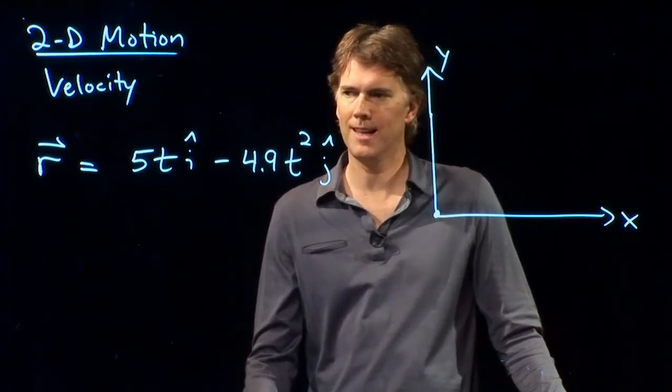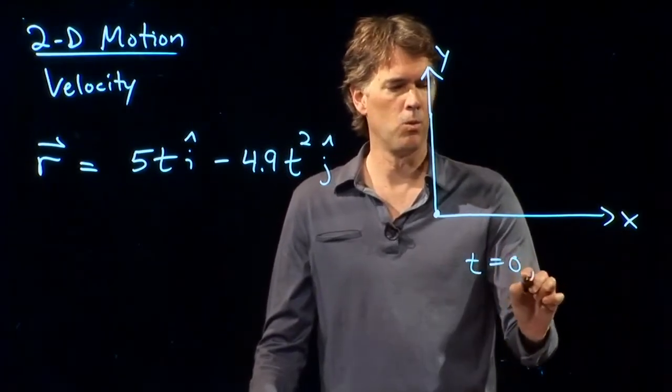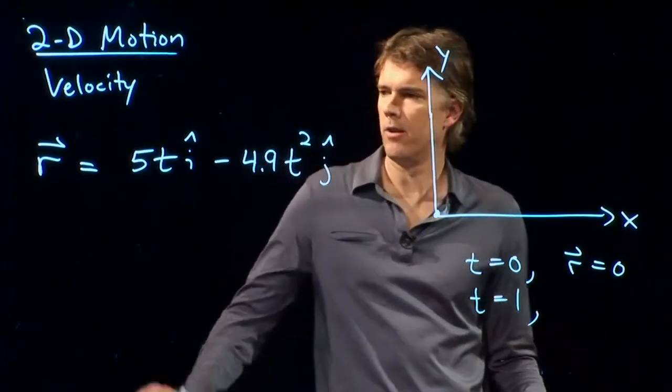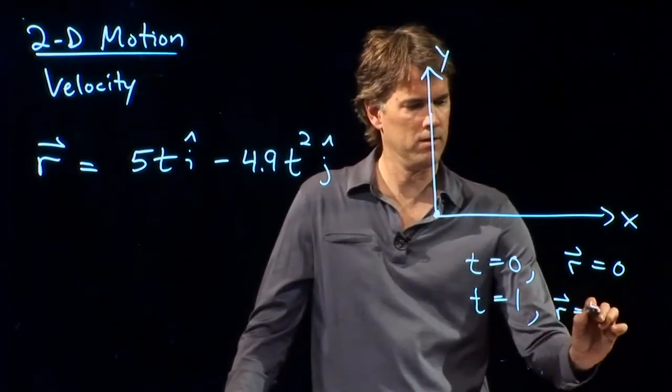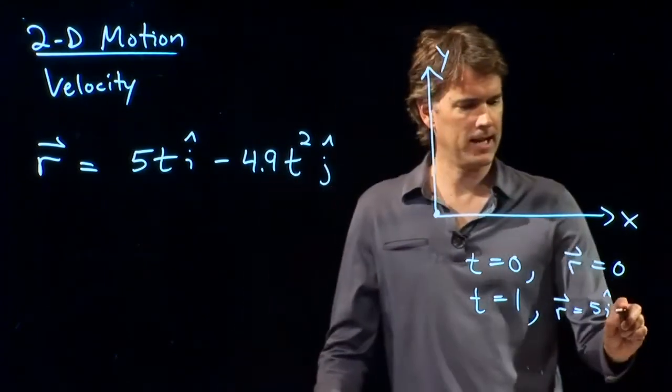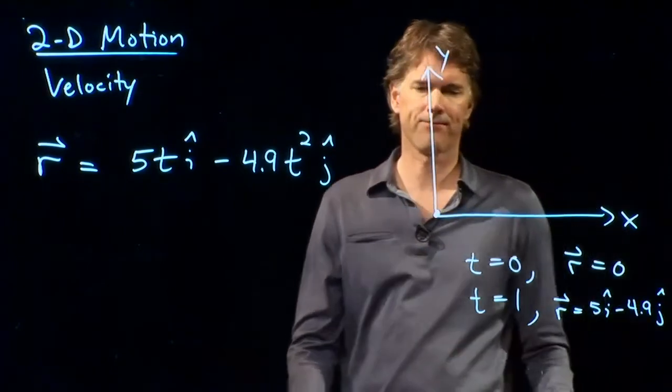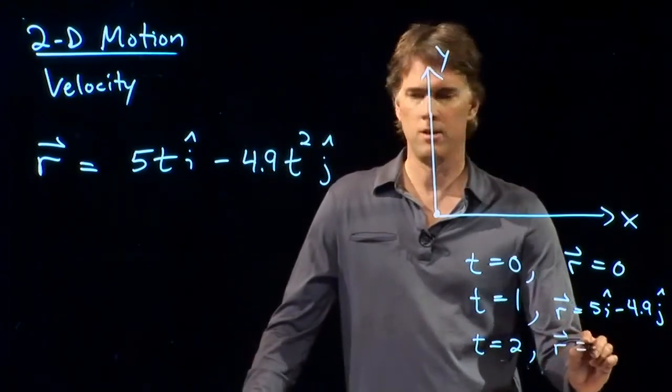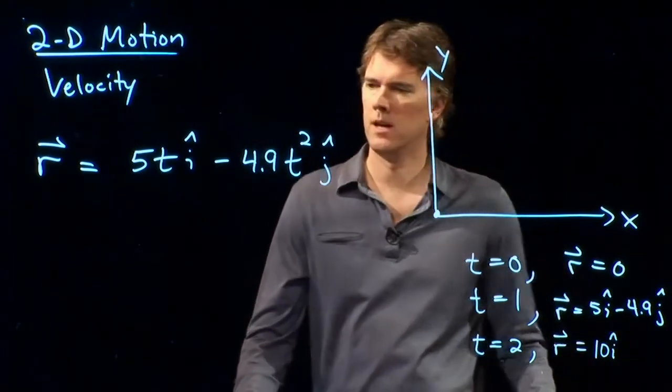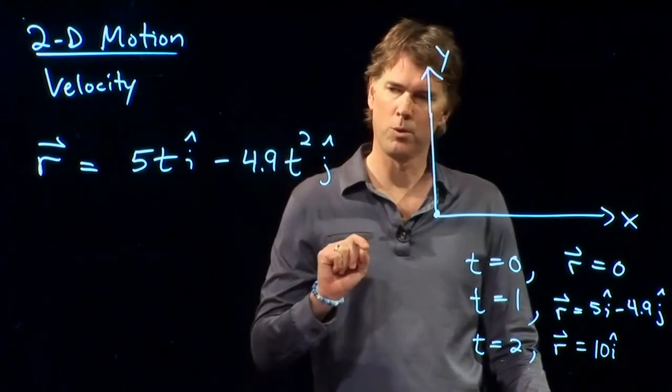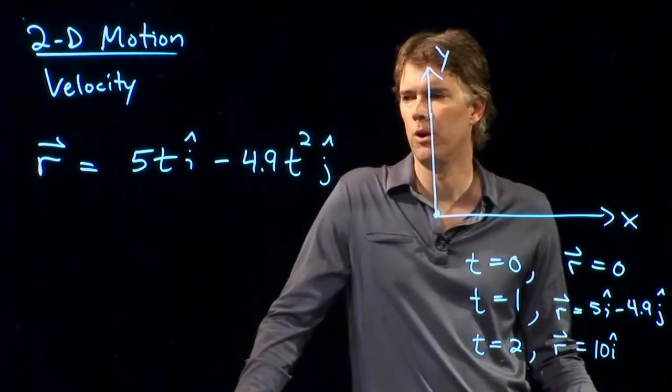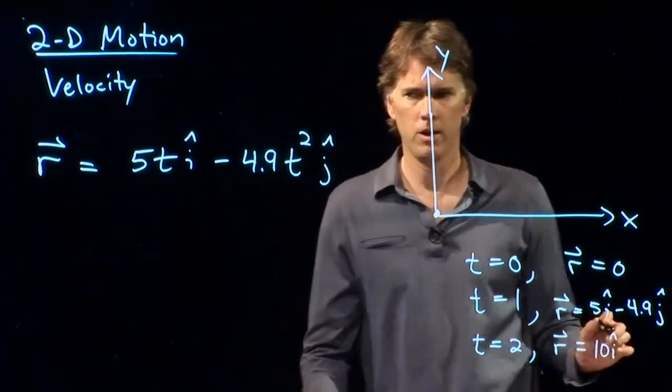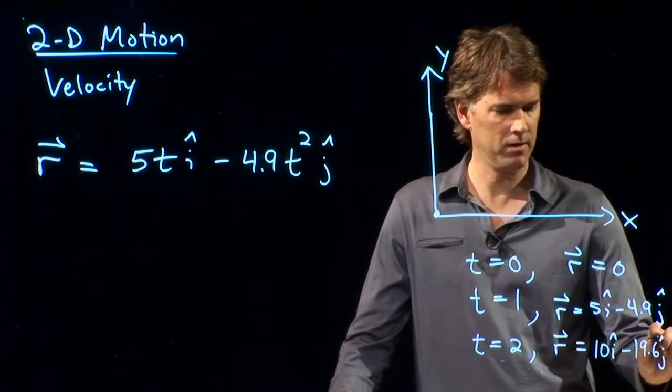Well, we can just plug in some numbers. Let's say that t is going to equal 1. So, at t equals 1, let's see what we have. We have 5 i-hat, and then we're going to have minus 4.9 j-hat. And later on, at t equals 2, what will we have? We will have 10 i-hat minus 4.9 times 2 squared is 4. So, 4.9 times 4 is what? Well, that's pretty close to 5 times 4 is 20. And then we need to fix it up a little bit, take off 0.4. And so, we should get 19.6 j-hat.